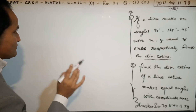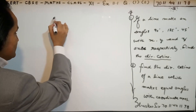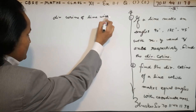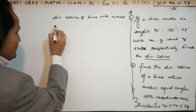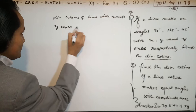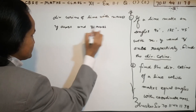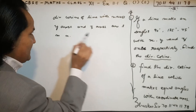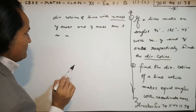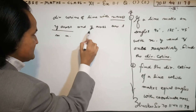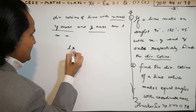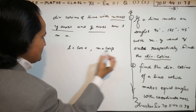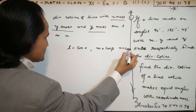You know very well that the direction cosines of a line with the x-axis, y-axis, and z-axis are L, M, and N. Suppose this line makes angle alpha with the x-axis, beta with the y-axis, and gamma with the z-axis. Hence the direction cosines are: L equals cos alpha, M equals cos beta, and N equals cos gamma.